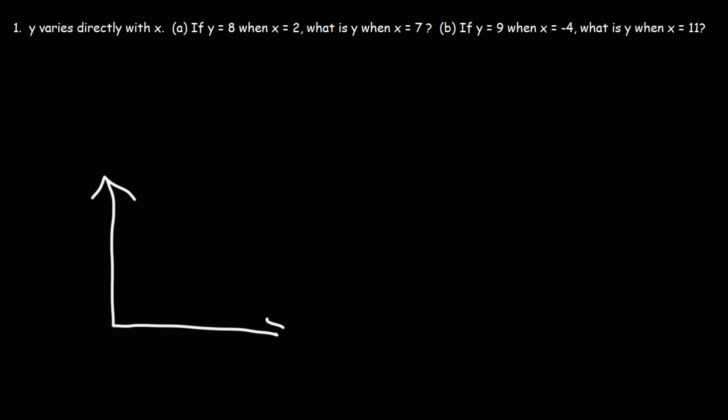Here's a graph. X is the independent variable, Y is the dependent variable. When Y varies directly with X, what we're going to have is a linear relationship.